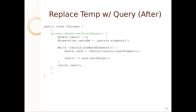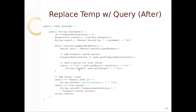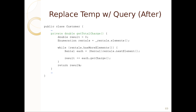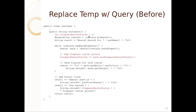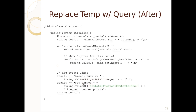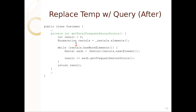Inside customer, `getTotalCharge` goes through all rentals, adds them up, and returns the total. This could be slower if called many times since we iterate through rentals again, but it cleanly answers that query. Similarly, we eliminate the frequent renter points temp by creating `getTotalFrequentRenterPoints` — a method that sums up frequent renter points across all rentals. This method does nothing else except calculate that total, keeping logic self-contained.